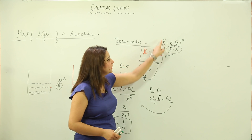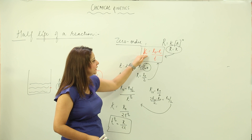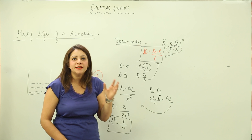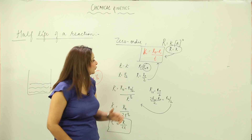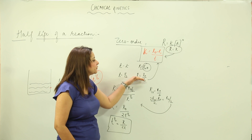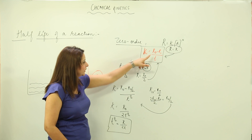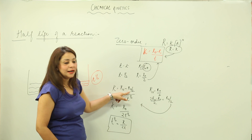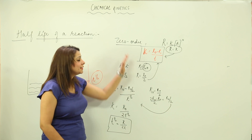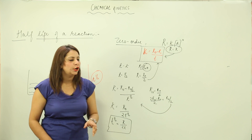To recap: we know the rate constant expression K = (R₀ − R)/T for zero order. We reduced time to T-half and concentration to R₀/2, substituted these values, and after simplifying we get T-half = R₀/(2K). This is the expression to calculate the half-life period for a zero-order reaction.